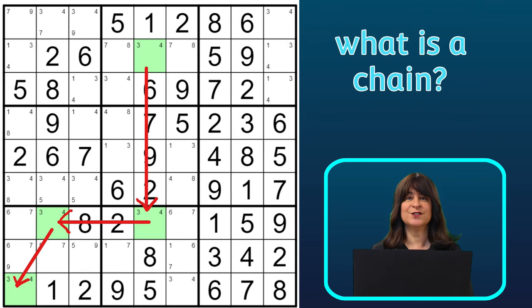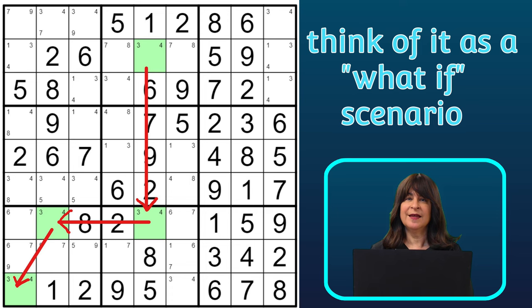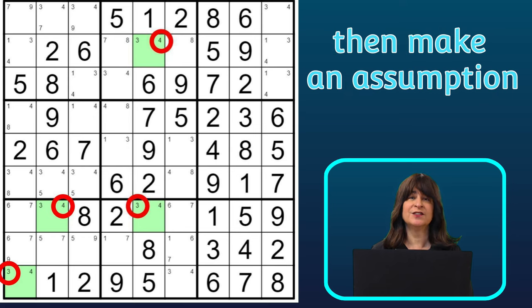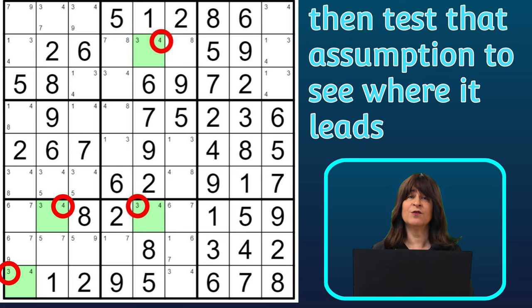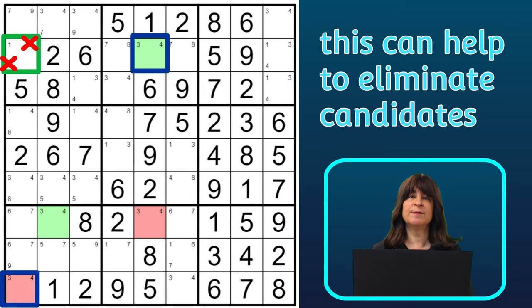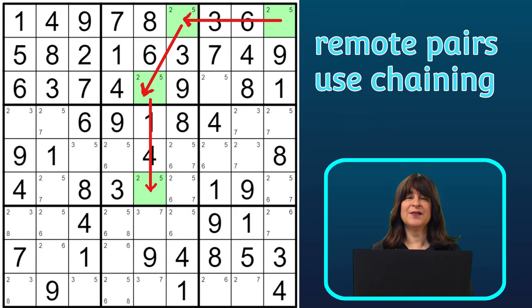So first of all, what is a chain? Well, I like to think of it as a what-if scenario. With a chain, we look at possible numbers and make an assumption that is true and then follow the implications from it being true to see where it leads. If it leads to a contradiction or an impossible result, then the assumption must be false. This helps us to eliminate candidates and usually helps to solve harder level puzzles. So now that brings us to the remote pair, which is the simplest of the various chaining strategies.